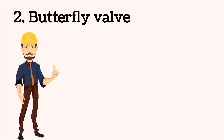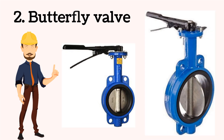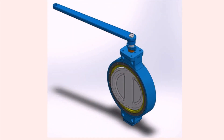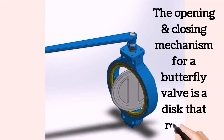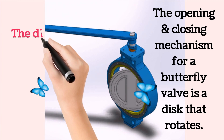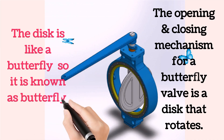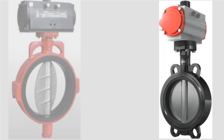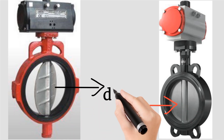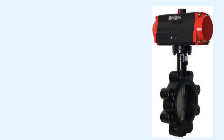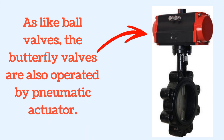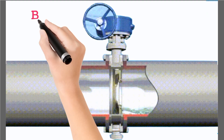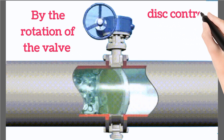Now we will see the second type of valve — the butterfly valve. The opening and closing of a butterfly valve is performed by a disc that rotates. The disc movement is like a butterfly, so this valve is known as a butterfly valve. In these images, the disc of the butterfly valve is shown by the arrow. Similar to the ball valve, the butterfly valve is also operated by a pneumatic actuator, and by the rotation of the valve, the disc controls the fluid flow.